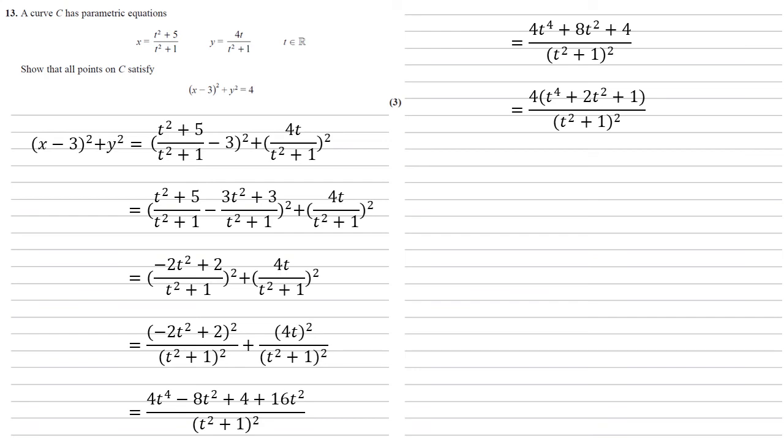Now t to the 4 plus 2t squared plus 1. You should be able to look at that and see it's quite a familiar form. That's just going to factorize to make 4 lots of t squared plus 1 all squared. But now we've got t squared plus 1 all squared on the top and the bottom, so they're going to cancel out, which just leaves us with 4.